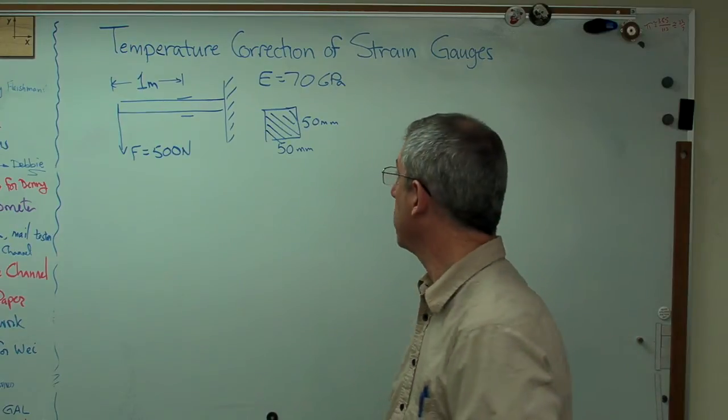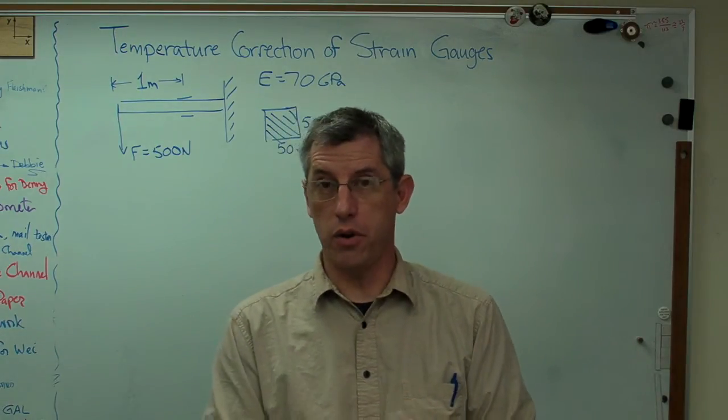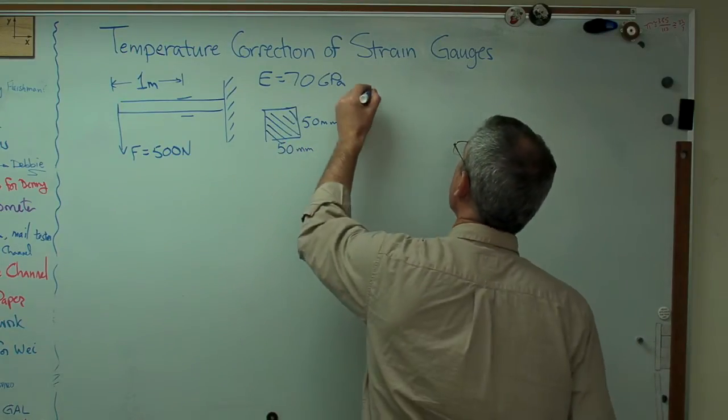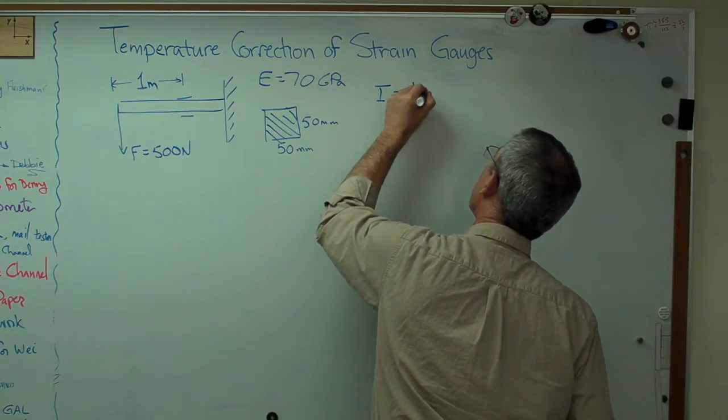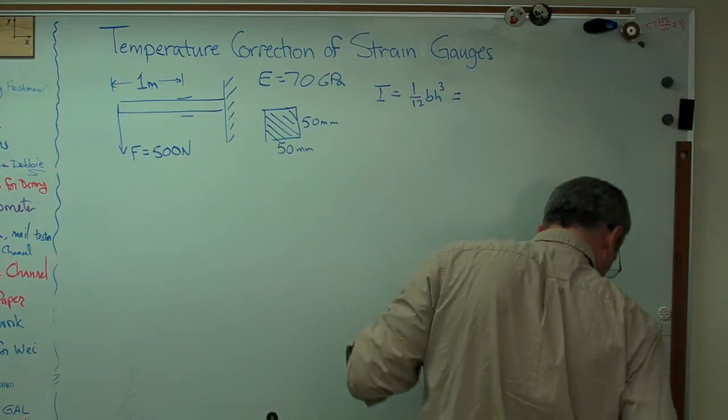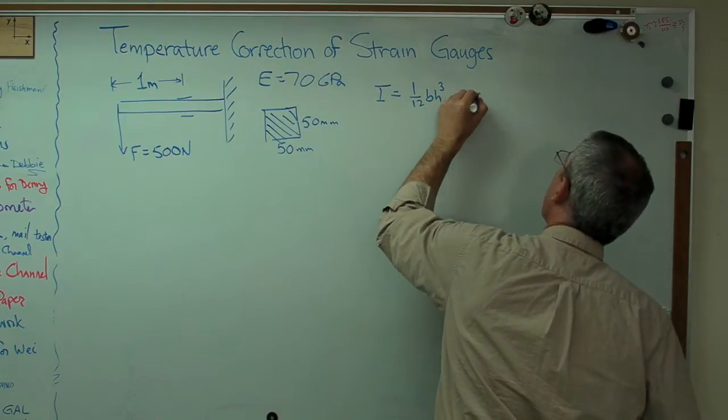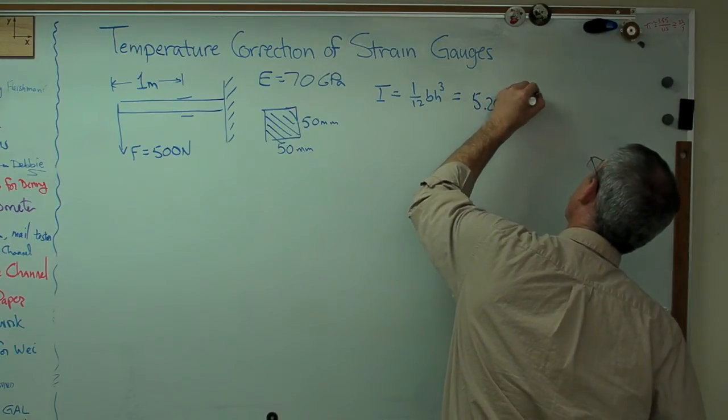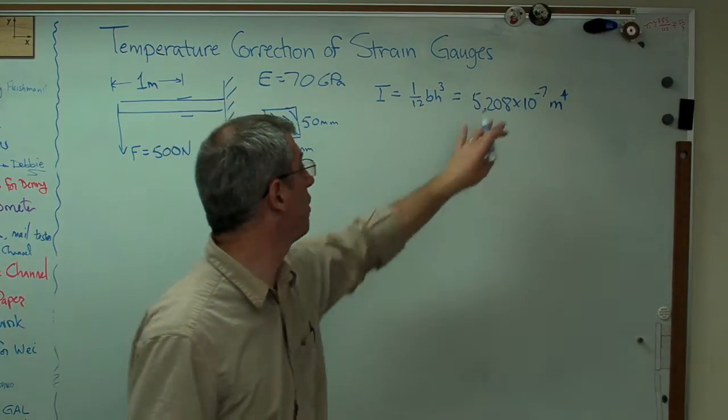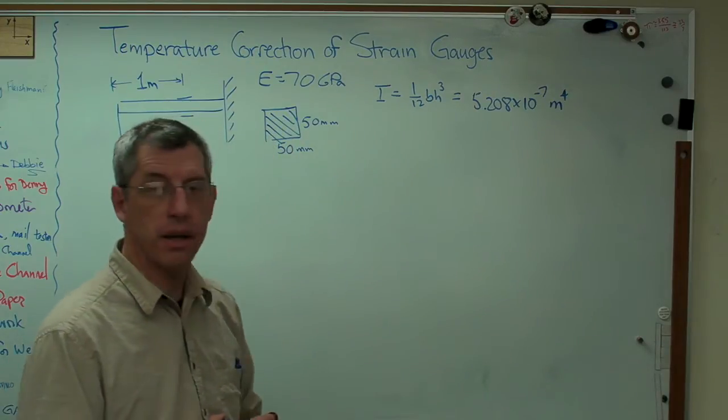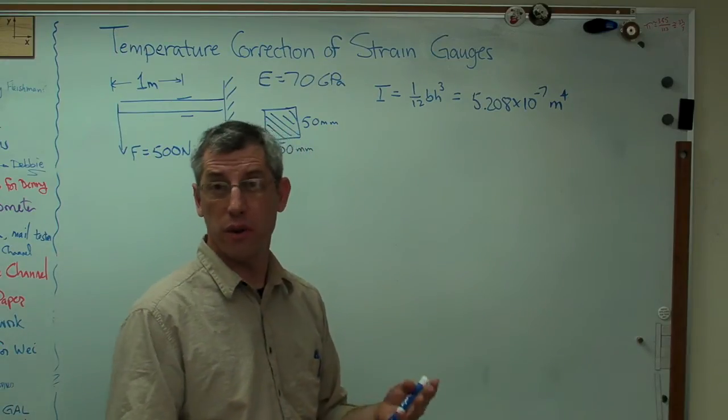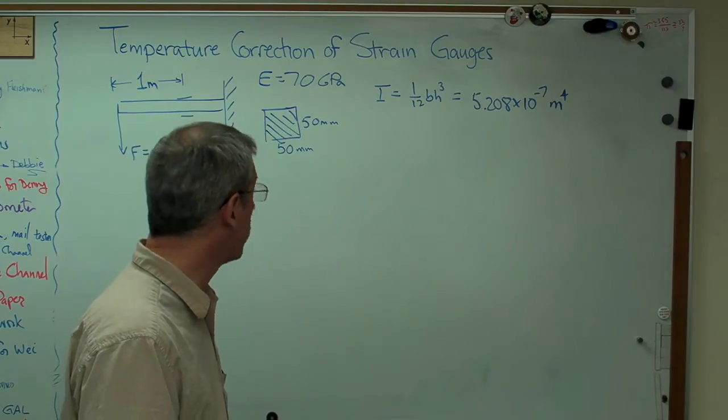We're going to need a couple of things here. We're going to need to know the area moment of inertia of the beam, and we're also going to need to know the coefficient of thermal expansion. The area moment of inertia is 1/12 bh cubed. Well, b and h are both 50 millimeters. So if you work that out, you get 5.208 times 10 to the minus 7 meters to the 4th. Now I'm going to do everything in base units here, so I'm going to do everything in meters and degrees centigrade. I found if I do it that way, I make fewer mistakes than if I'm constantly trying to convert units.